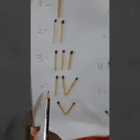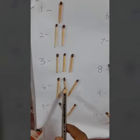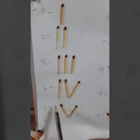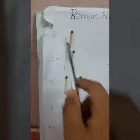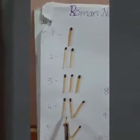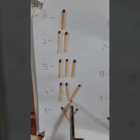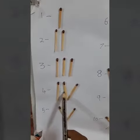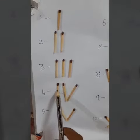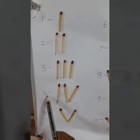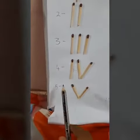For 4, we have V. V stands for 5 and I stands for 1. So, we have to subtract — the greatest number is 5 minus 1 equals to 4.